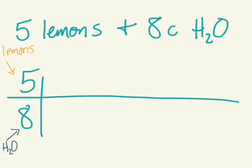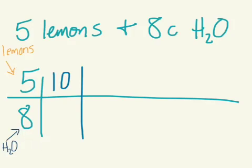So five lemons, eight cups of water — which would mean that if Emma all of a sudden has 10 lemons, and we doubled five to get 10, then we need to double eight to figure out how many cups of water. The double of eight is 16, so Emma would need 16 cups of water.